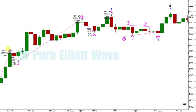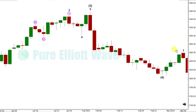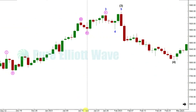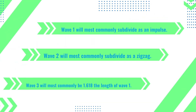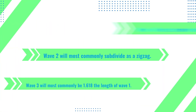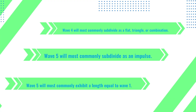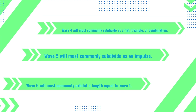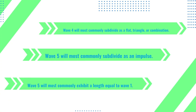For instance, how much does wave 2 retrace versus wave 1? How far does wave 3 go in relation to wave 1? This was done to test core assumptions made by Frost and Prechter in the Elliott Wave Principle. We tested whether wave 1 most commonly subdivides as an impulse, whether wave 2 most commonly subdivides as a zigzag, whether wave 3 will most commonly be 1.618 times the length of wave 1, whether wave 4 subdivides as a flat, triangle, or combination, whether wave 5 subdivides as an impulse, and whether wave 5 most commonly equals the length of wave 1.